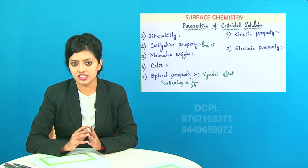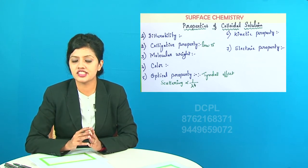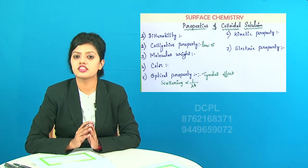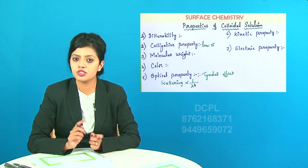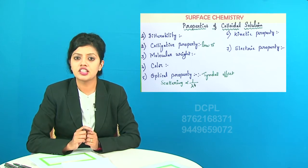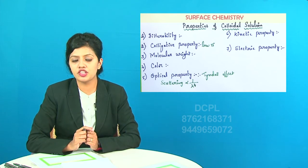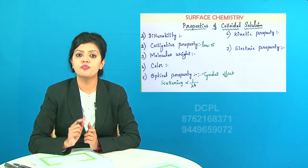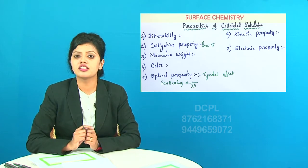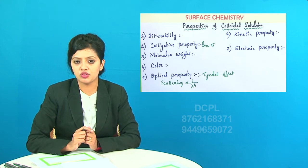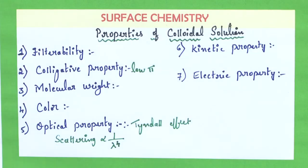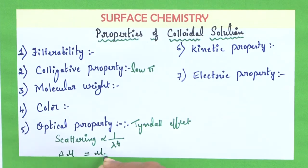The second factor affecting Tyndall effect is size: smaller the size, greater is the scattering. The third factor is the refractive index of the dispersed phase and dispersed medium. The refractive index for the dispersed phase particles is given as μp and for the dispersed medium as μm. The difference is calculated by the formula: Δμ = μp − μm.